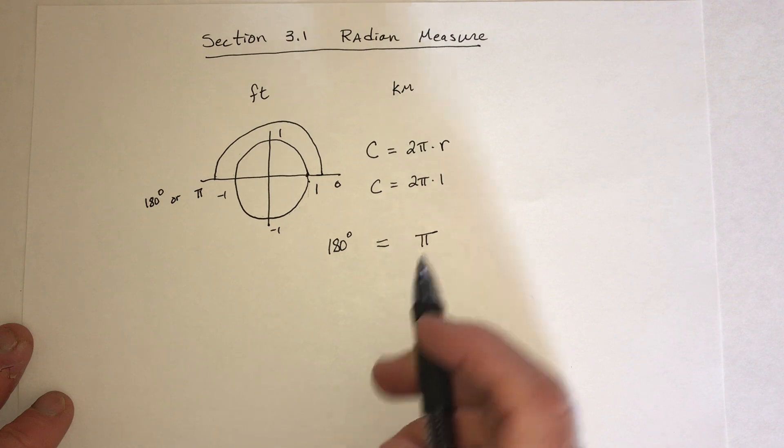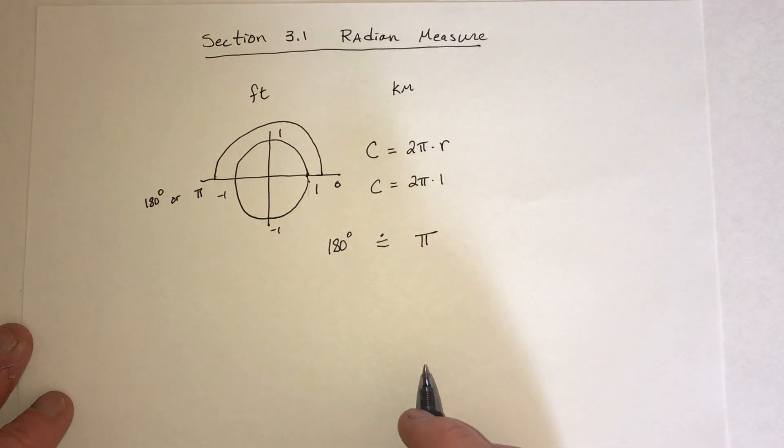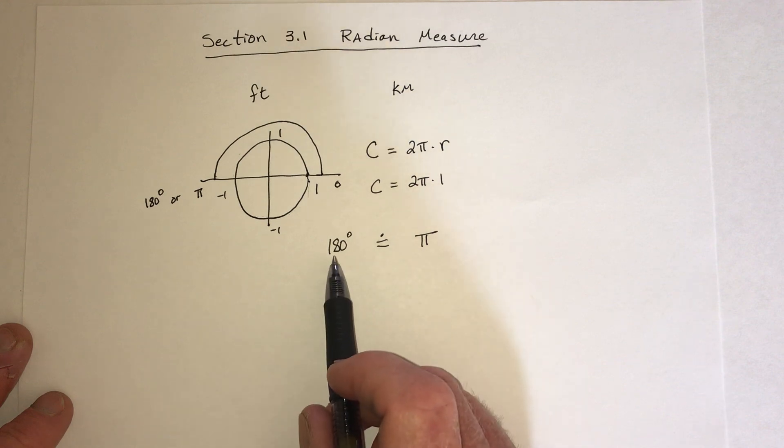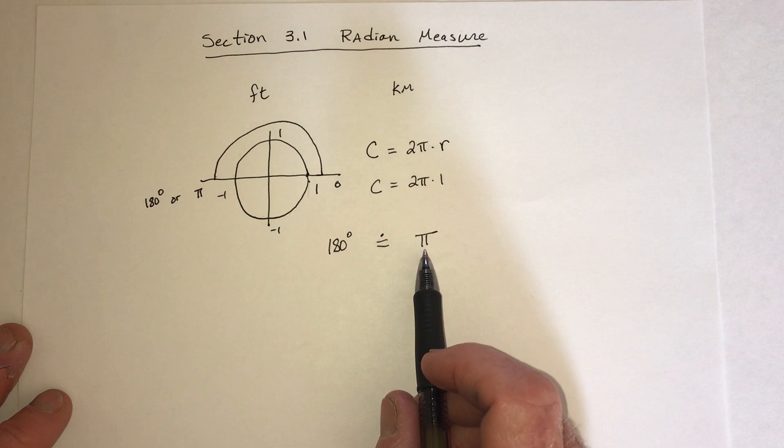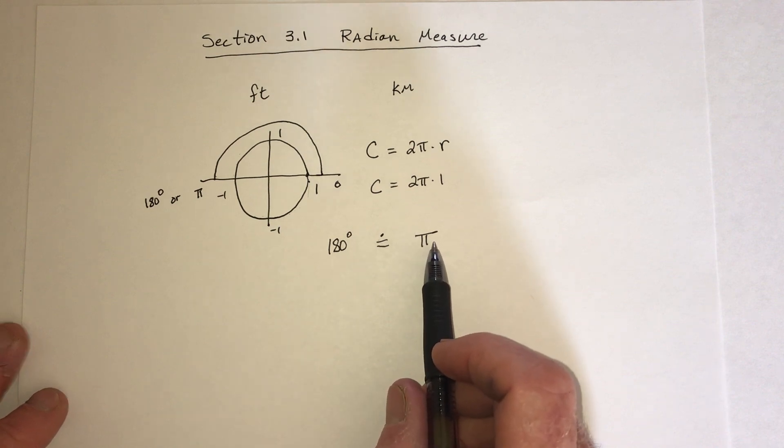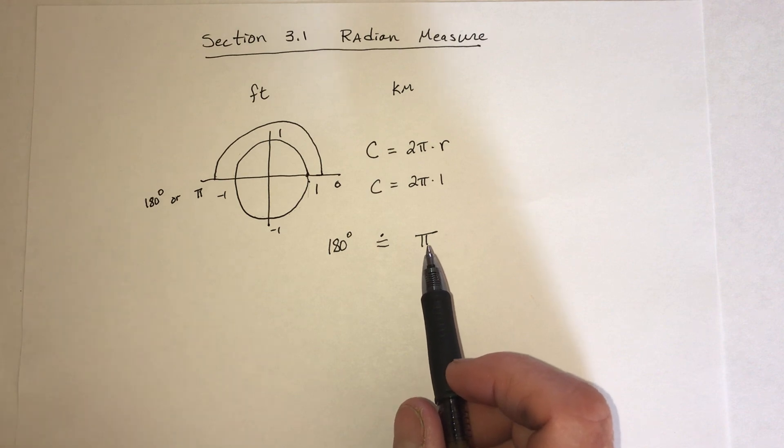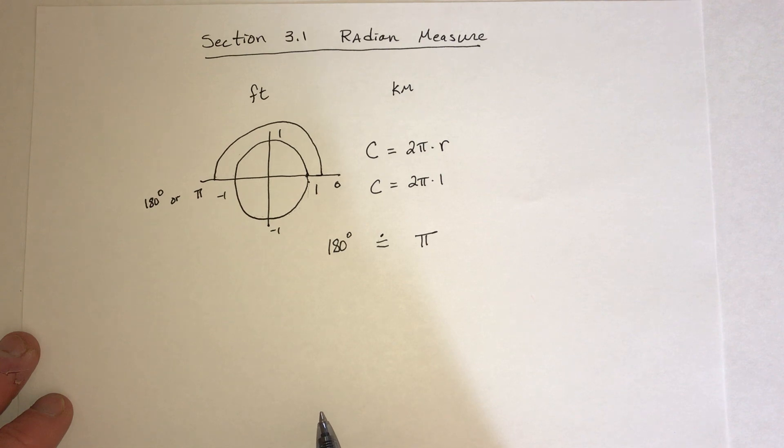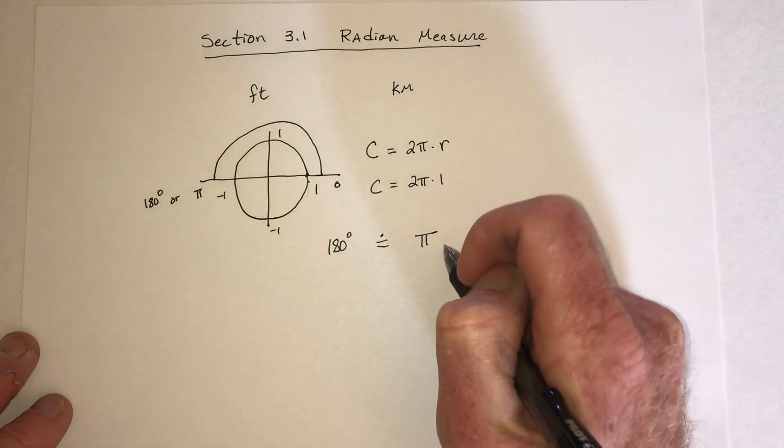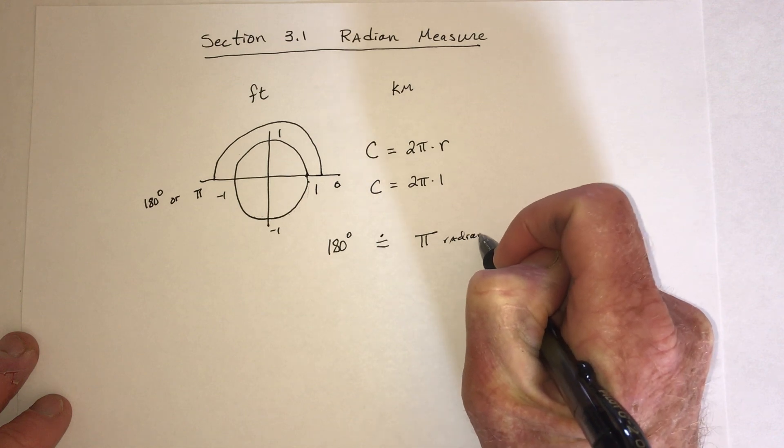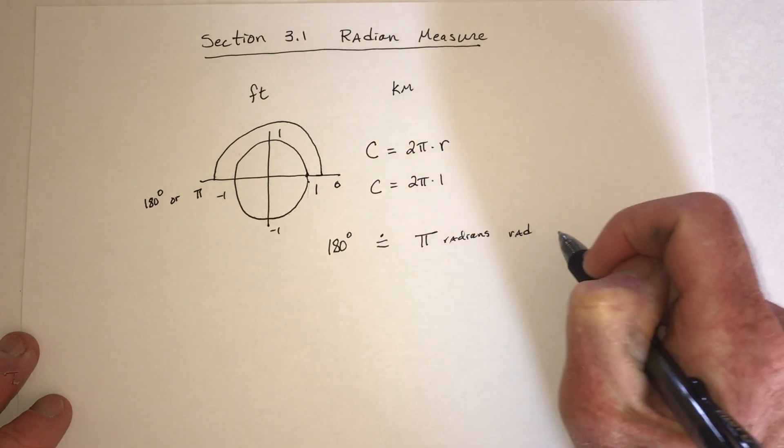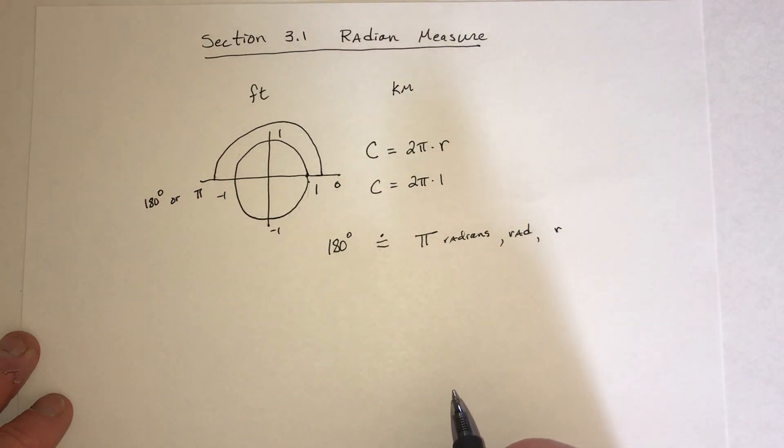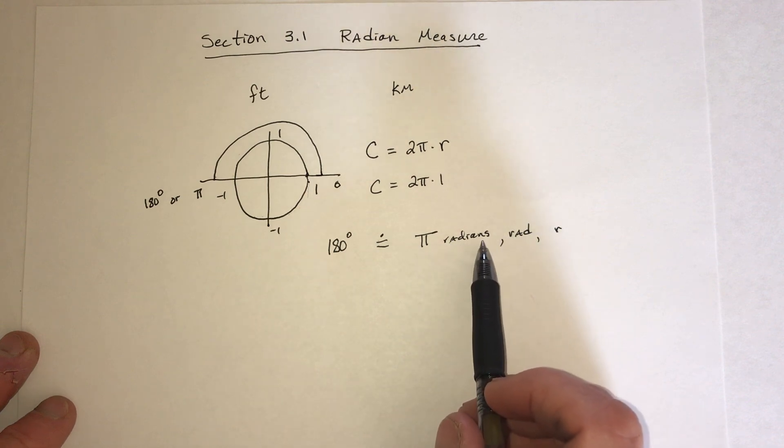Now, I write equals when I really should write equivalent to. Because this is basically like two languages. Like if this is the word for cat, this is the word gato. So they mean the same thing. They're not exactly equal. Cat does not equal gato. But they represent the same idea. Anyway, that's a small detail. So pi in radians, and sometimes it's written as radians, sometimes it's written as rad, and sometimes it's written as r. Usually, it's not written at all. Because this is the system that's used most of the time, the radians.